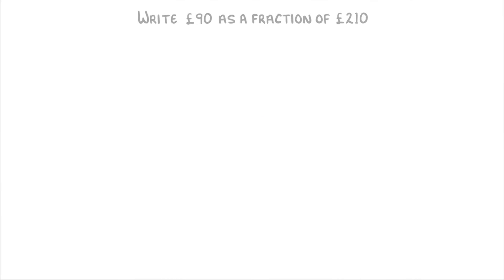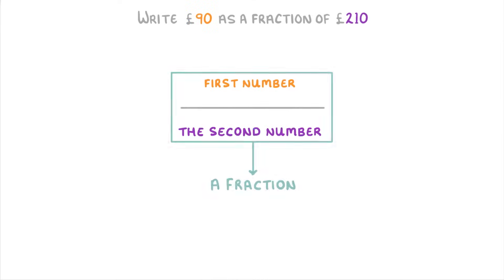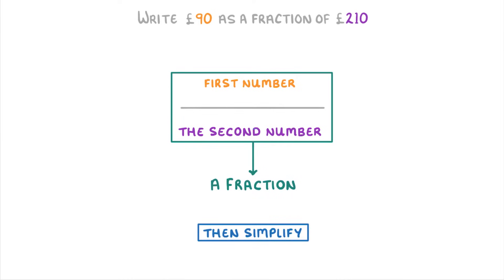Now, to write one number as a fraction of another number, like 90 pounds as a fraction of 210 pounds, we just put the first number over the second number to make a fraction. And then we simplify the whole thing down as much as we can.